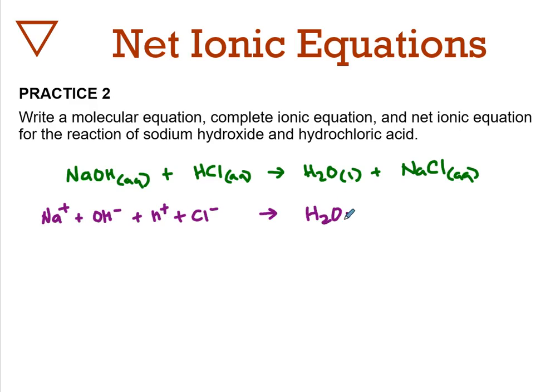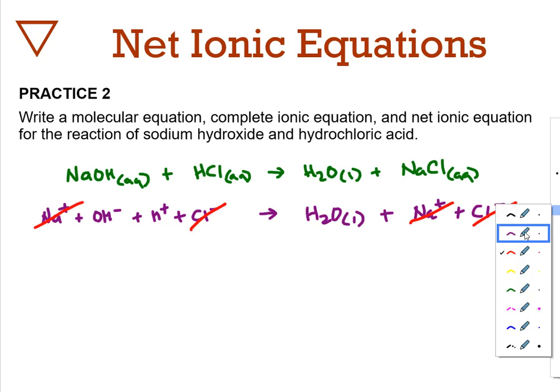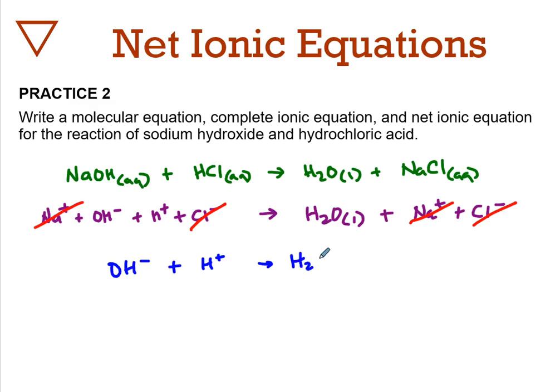Now our complete ionic equation. Water, our new molecule forming, does not get written as ions. We can cross through anything that appears as an ion on both sides, making sure quantities match. We have hydroxide plus hydrogen makes water. You might say that's awfully simple - those two things make water. It's true of any strong acid, strong base system, and when we learn about acids and bases you'll see that.